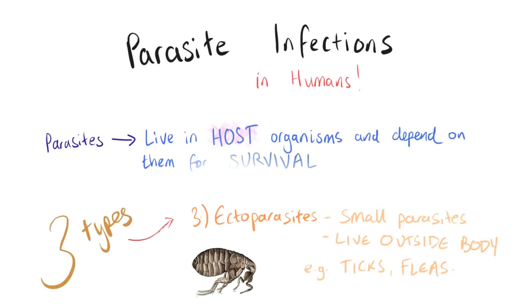Ectoparasites are a third type of parasite which affect humans. They are small organisms that live outside on the body, and these include ticks and fleas.